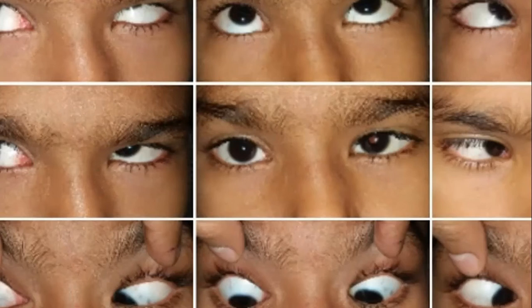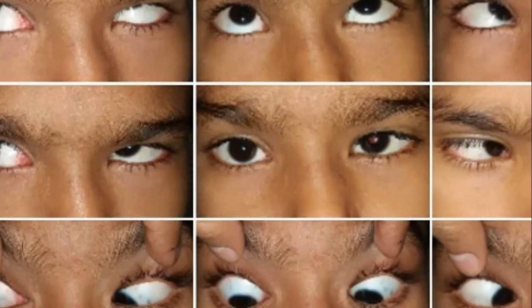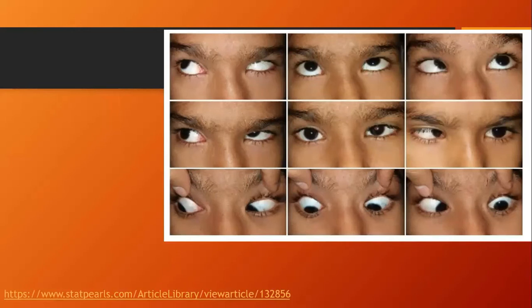Normal red reflex indicates clarity of media; anything affecting the media — cataract, retinoblastoma, or vitreous hemorrhage — will affect the quality and brightness of the red reflex. In this photo we have three signs: the most important is esotropia; there is also asymmetry in the palpebral fissures with narrowing in the left eye; and a bright Brückner test due to squint.